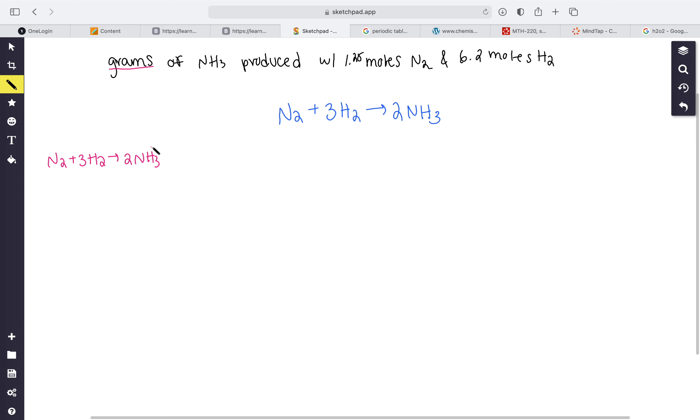Here's what we're given - we have 1.25 moles of N2 and we also have 6.2 moles of H2. What I'm going to do is divide this by this to find out how much product is possibly made with each of these.